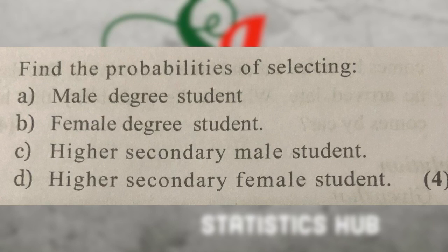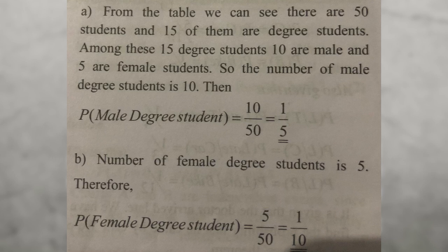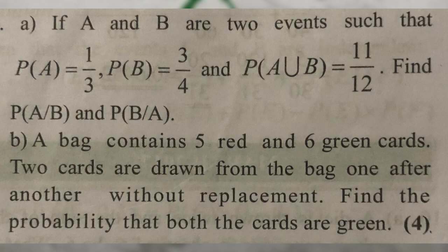If we have a male degree student, we will calculate the probability from the total. If we have a female degree student, we will similarly calculate the probability. For two events, we find P of A and P of A union B.